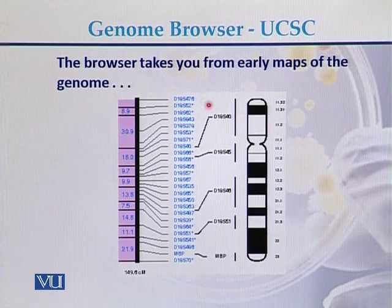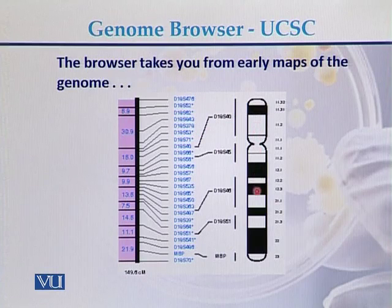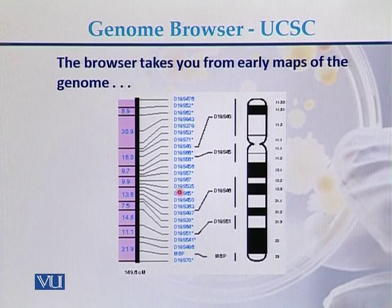The UCSC genome browser gives information about markers that have been mapped on the human genome and other genomes, as well as the cytogenetic map. Here we can see that the cytogenetic maps can be viewed at the UCSC genome browser, and these are the list of markers which are present on a particular chromosome.